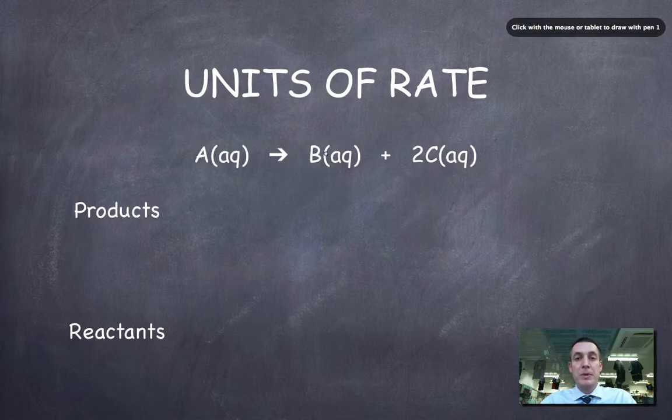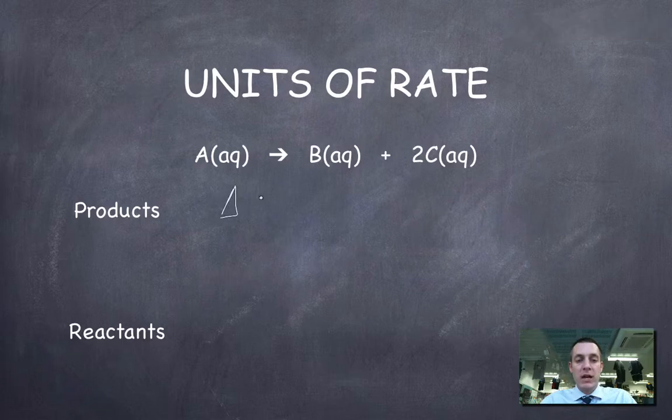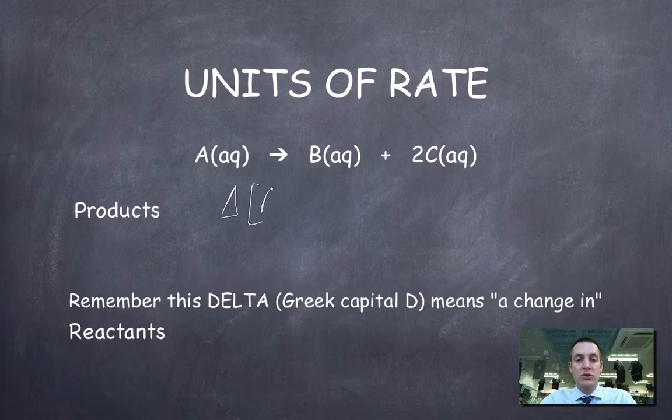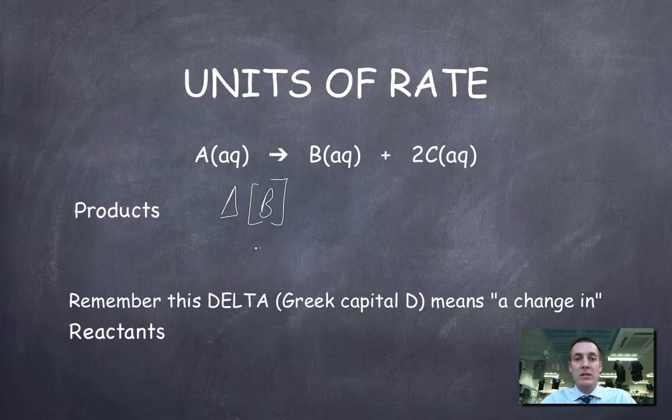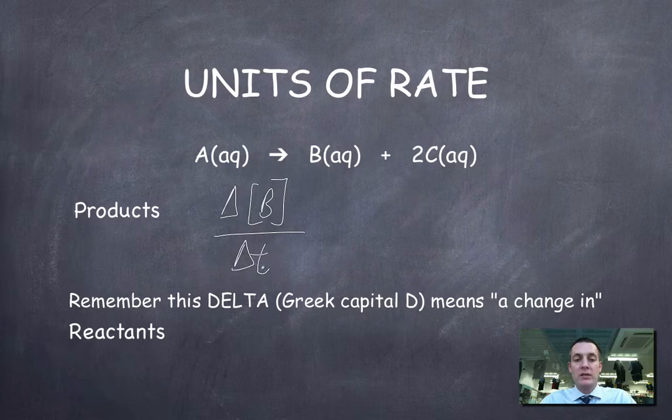So all these things are in solution here, divided by the time taken to make that change. For example, if I chose this first product B, I could say that the rate of this chemical reaction could be expressed as the change in the concentration of B divided by the time taken to make that change.